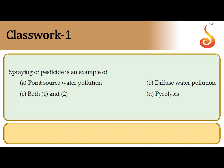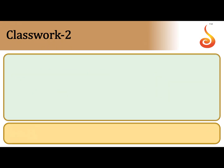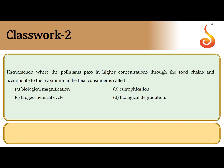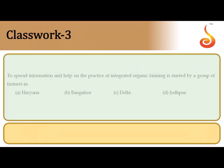The first environmental issues question: spraying of pesticide is an example of diffuse water pollution, because it happens over a wide surface area. So the correct answer is option B. The second question: the phenomenon where pollutants pass in higher concentration through the food chain — as we travel up the food chain, the concentration of a toxic substance keeps increasing. This is referred to as biological magnification or biomagnification. The correct answer is option A.